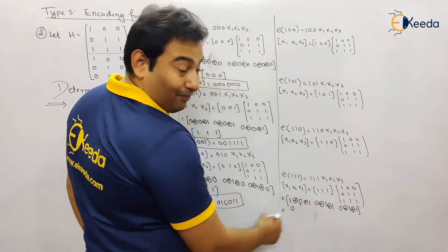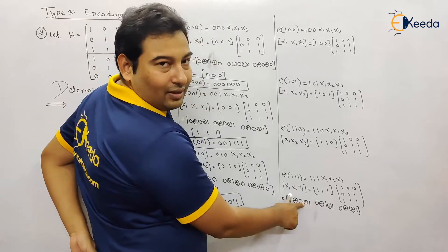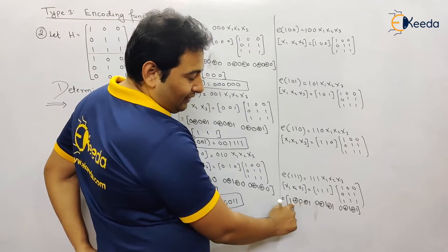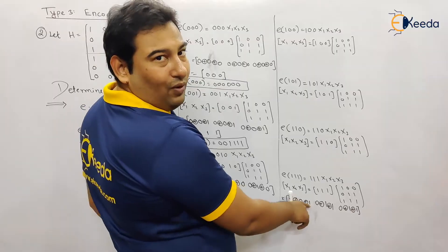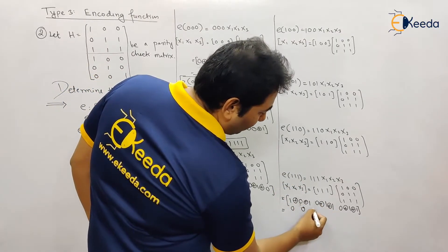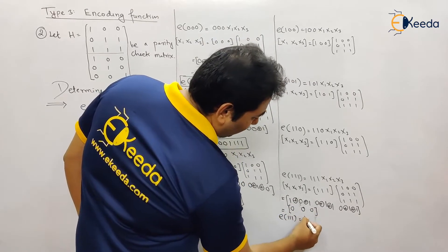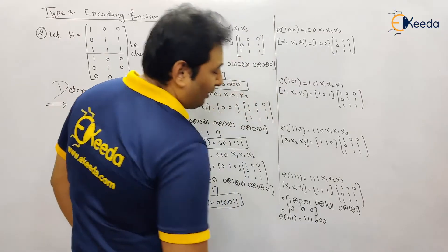So this will be 0. Because 1 XOR 0 is 1, and that result 1 will again be XOR with the 1. So 1 and 1 will be 0. This is also 0, and this is also 0. So code for e 1 1 1 is triple 1 and triple 0. Is this clear?